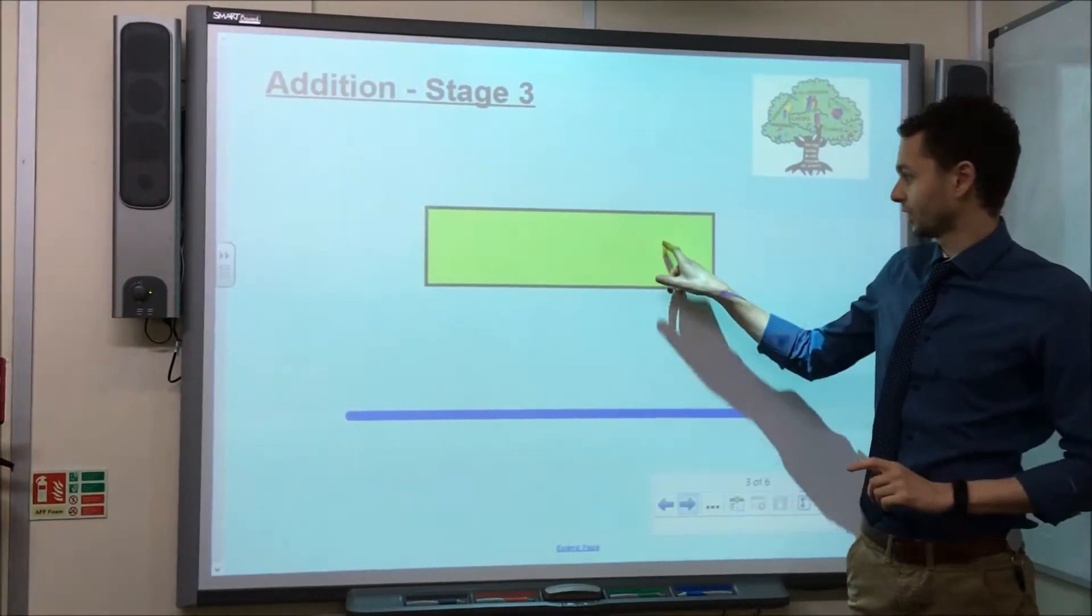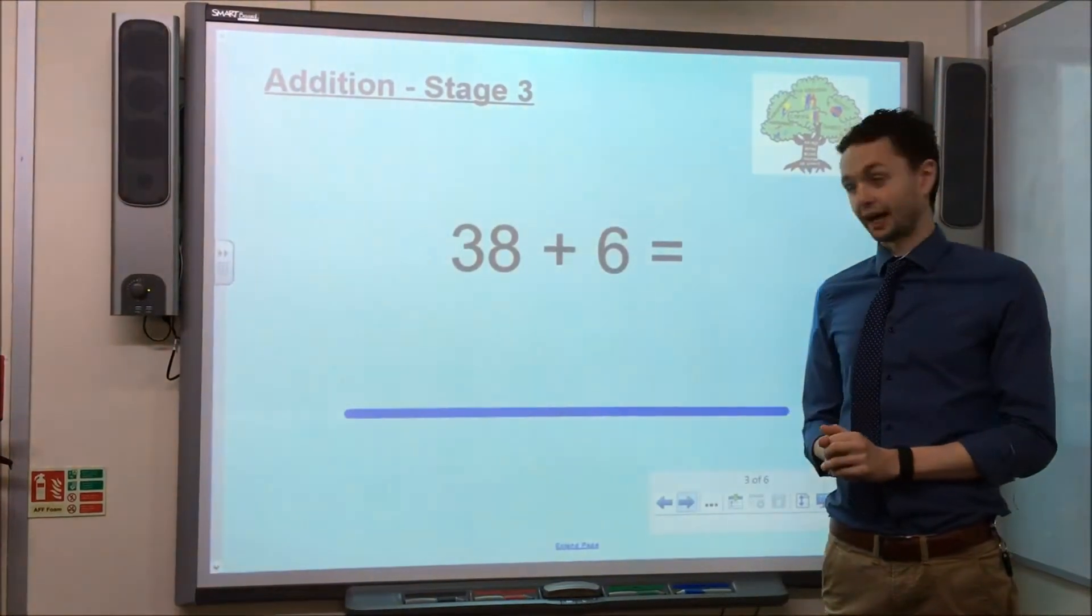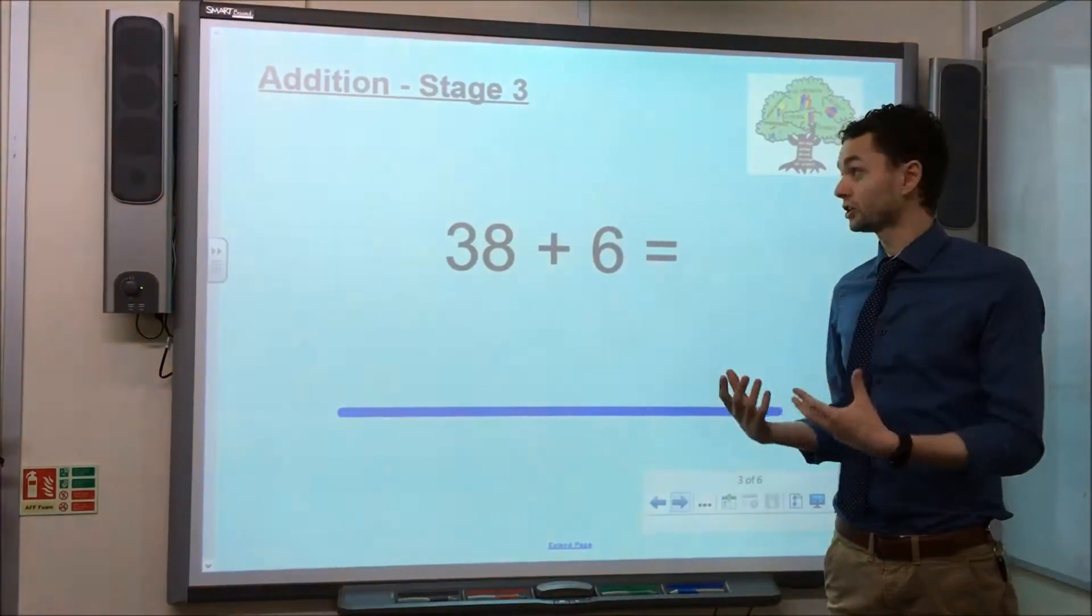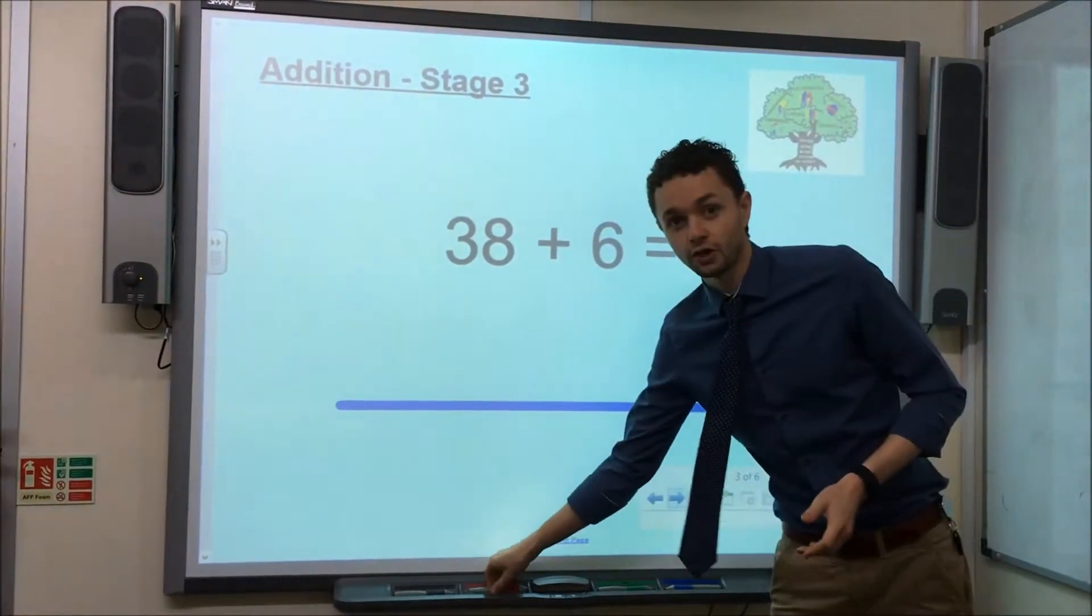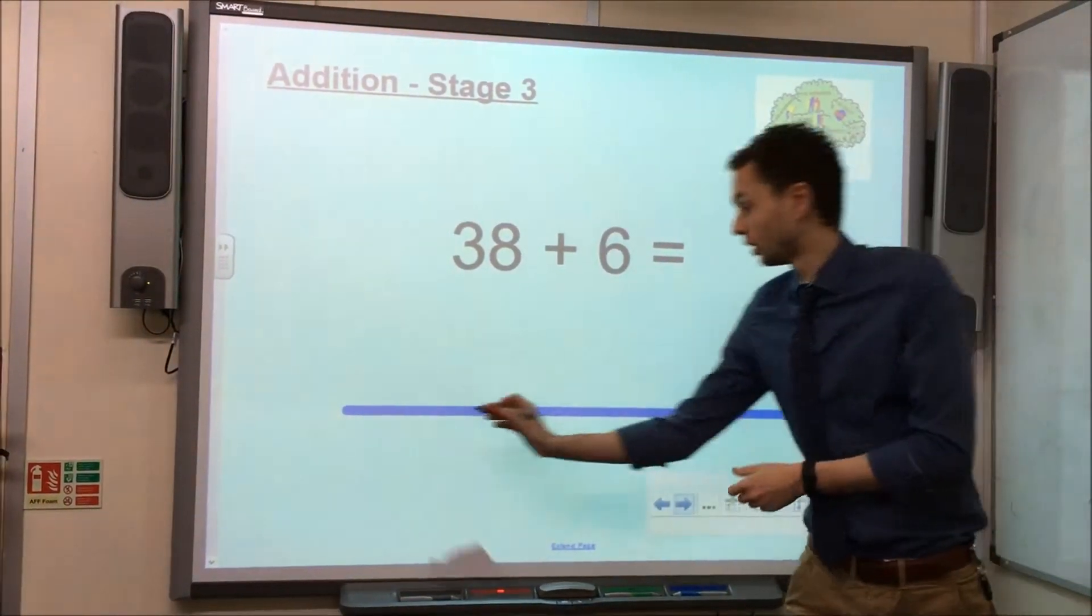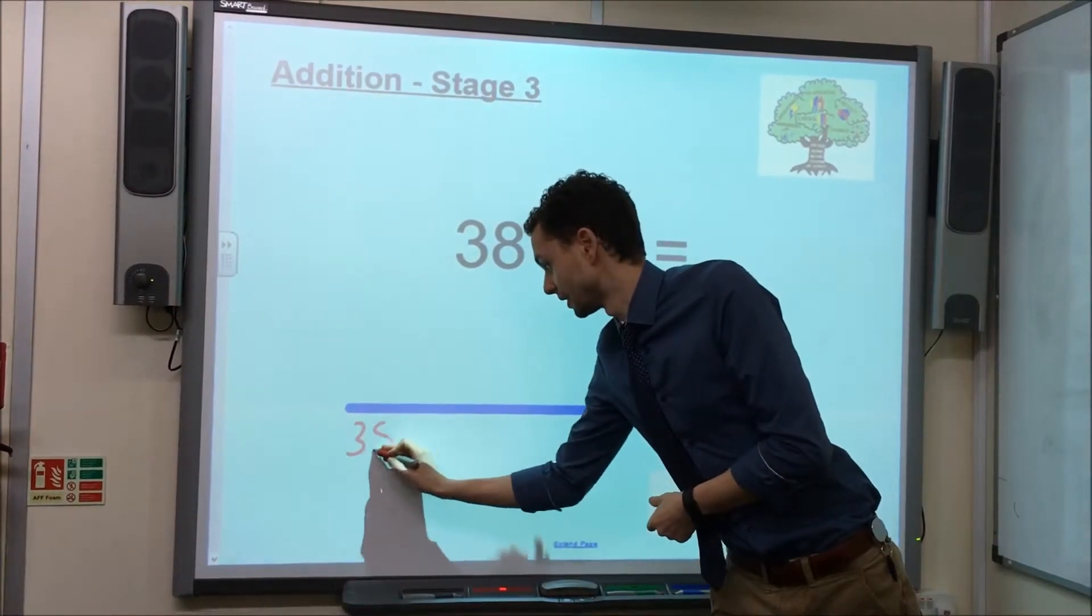So, let's take a look at a calculation. 38 add 6. The starting point for the method is similar to Stage 2, which is great, in that we take the first number, 38, and that goes at the start of our number line, 38.